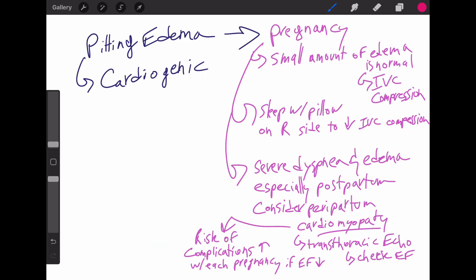Another cause could be pregnancy. Small amounts of peripheral edema is normal during pregnancy due to IVC compression by the uterus. Management includes advising the patient to sleep with a pillow under the right side to reduce the IVC compression. If there is severe dyspnea and edema, especially postpartum, you must consider peripartum cardiomyopathy. The first step in diagnosis is transthoracic echo to assess for the ejection fraction. Risk of maternal and fetal complications increases with each subsequent pregnancy if ejection fraction is reduced.